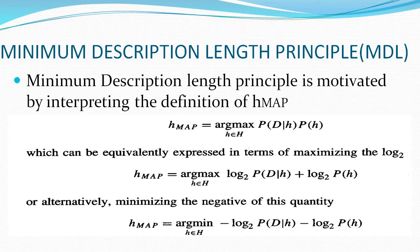The minimum description length principle is motivated by interpreting the definition of H_MAP, the maximum a posterior hypothesis. We already know the maximum posterior hypothesis is represented by a standard formula, and we can express it in terms of maximizing log base 2: arg max h in H of log2 P(D|H) plus log2 P(H).